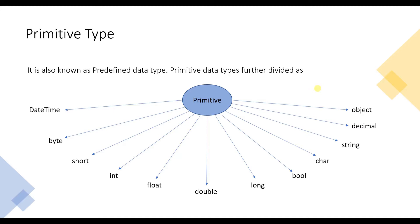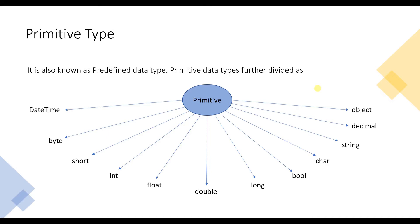The primitive types include: byte, short, int, long, bool, decimal, string, and object. These are the further types under the primitive types.